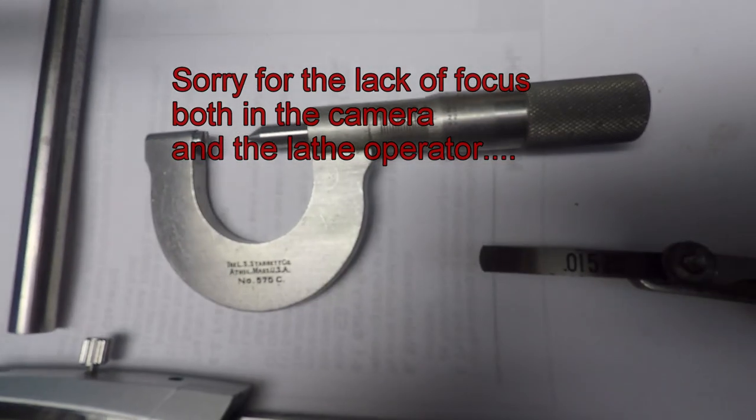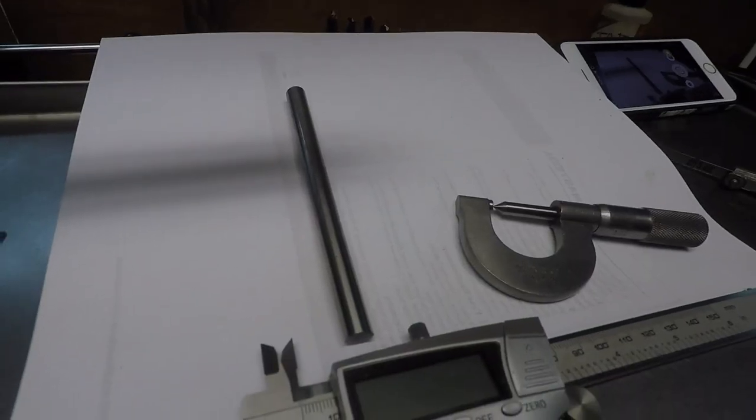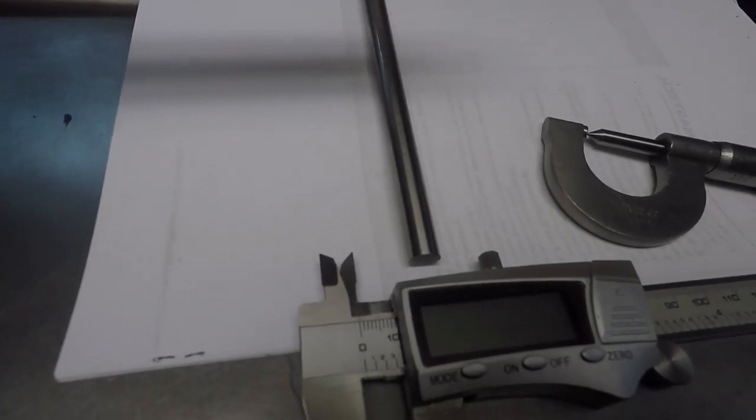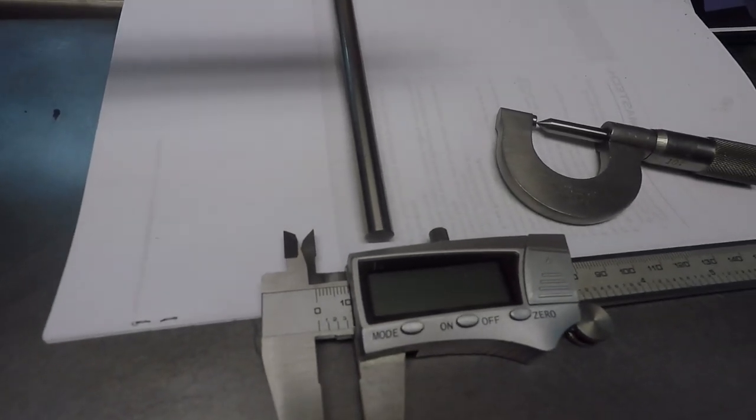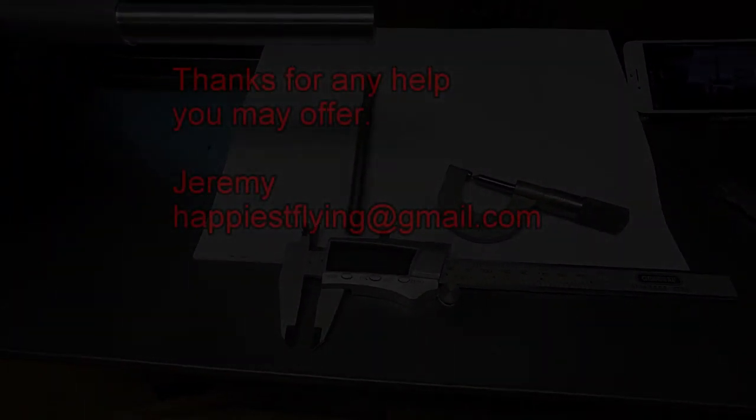So 21 thousandths seems to be an error that occurs the moment that you back off this micrometer. There's something I'm failing to understand, I'm aware of that, but I just don't know what the issue is. Anyway, hope you guys can help.